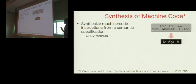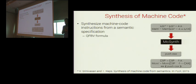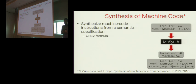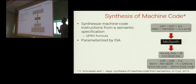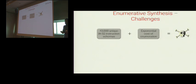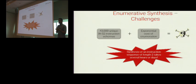MixSynth takes a QFBV formula as input and synthesizes an instruction sequence that implements it — that is, equivalent to the input formula. MixSynth is parameterized by the ISA of the target instruction sequence, so one can instantiate the algorithm to work on other ISAs as well. A key challenge is the enormous size of the synthesis search space: IA-32 has billions of instructions, and even abstracting away immediate operands we have tens of thousands of instruction schemas. This exponential cost means a naive enumerative synthesizer can take several hours or days to synthesize an instruction sequence of just length 2.